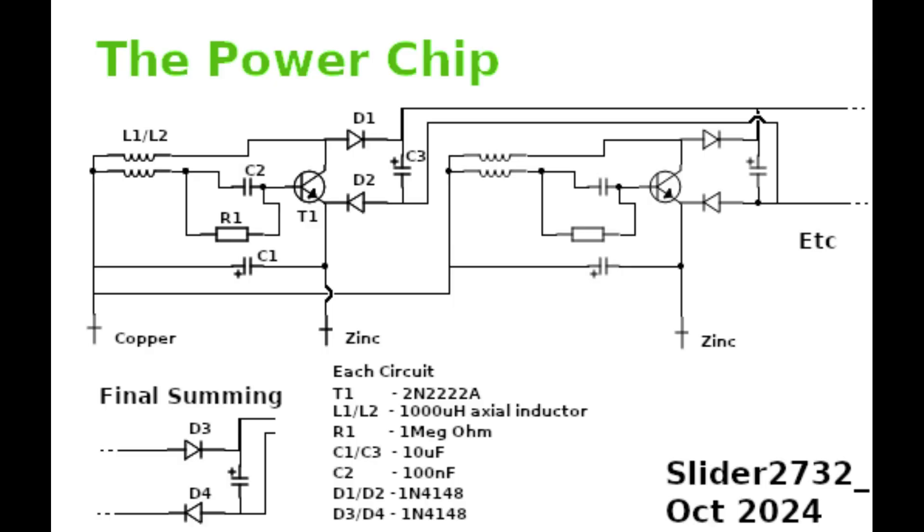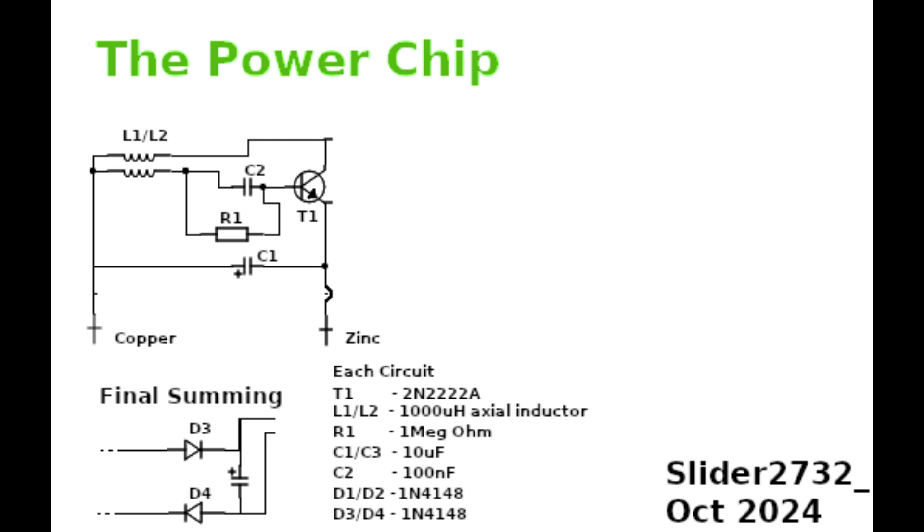Okay, so here's what he's done. He's taken the power chip circuit and just used the circuit in the top left. He's got rid of any connections that go to the right-hand side, the diodes and such, and he's also got rid of the final summing section. So we've got a general normal blocking oscillator, quite a familiar type.